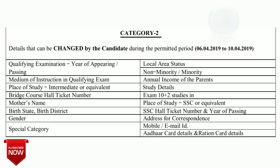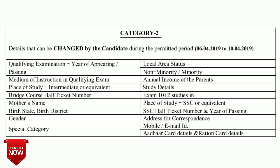Category 2 includes details like qualifying examination, year of appearing or passing, medium of instruction in qualifying exam if you have selected it wrong, mother's name, birth state, birth district, gender, special category, local area status, non-minority or minority status, and whether you have committed a mistake in entering your annual income of parents or study details.